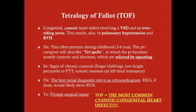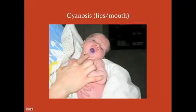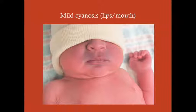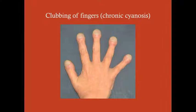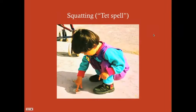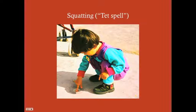Tetralogy of Fallot is the most common cyanotic congenital heart defect. Cyanosis is visible in the lips and particularly in the oral mucosa — looking inside the mouth is a great place to check. Chronic cyanosis also produces clubbing of the fingers. The classic tet spell presentation involves a child in the preschool age range, roughly three to six years old, who becomes cyanotic and squats down for relief.